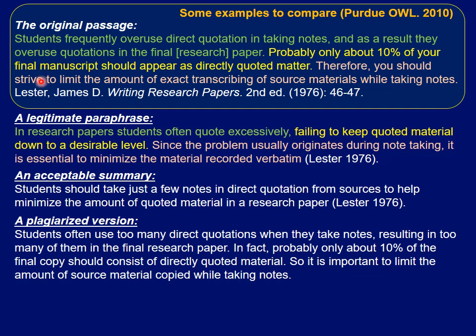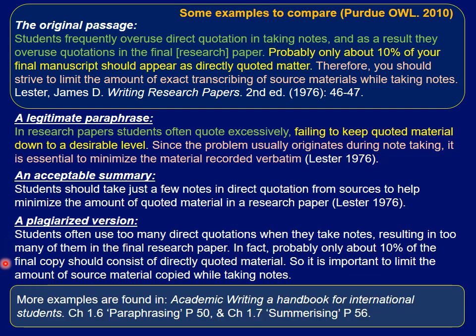The example consists of three sentences, and shows a legitimate paraphrase where you can see how each sentence has been altered to produce a good paraphrase. One version shows an acceptable summary of the original while the plagiarized version shows that only some words have been changed without altering the sentence style. For more examples about paraphrasing, you can look in the textbook mentioned before, in Chapter 1.7 on Summarizing, page 56.